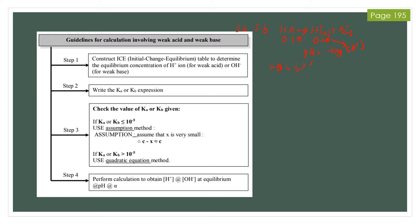But for weak acid and weak base, you cannot simply insert the value — you need to construct an ICE table. By constructing the ICE table, you will know the concentration of H+ and A- at equilibrium, and those values can then be substituted into the pH equation. To construct an ICE table, you need a balanced equation together with the phase, so that you know how to write the K expression.